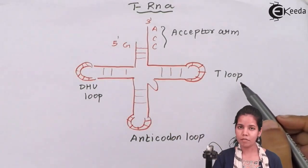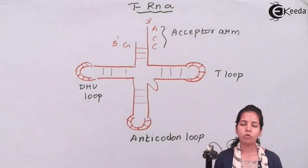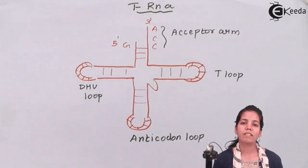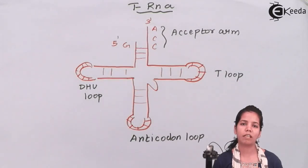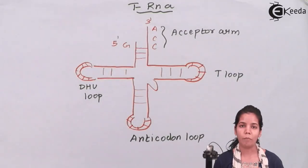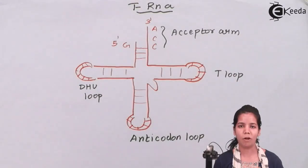The T loop helps in the transfer of the anticodon. In this chapter we have studied about tRNA and how tRNA helps to carry an activated amino acid from the cytoplasm to its site of protein synthesis.